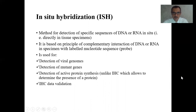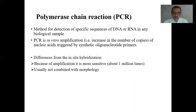In situ hybridization is a method for detection of specific sequences of DNA or RNA in cells. It is based on the principle of complementary interaction of DNA or RNA in the specimen with a labelled nucleotide sequence or probe. It is used for detection of viral genomes, detection of mutant genes, detection of active protein synthesis, and immunohistochemistry data validation. Polymerase chain reaction (PCR) is a method for detection of specific sequences of DNA or RNA in any biological samples. PCR is an in vitro amplification of nucleic acids triggered by synthetic oligonucleotide primers. It differs from in situ hybridization because amplification is more sensitive and is usually not combined with morphology.